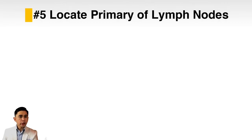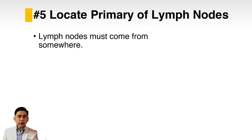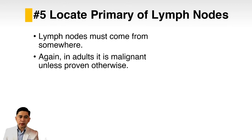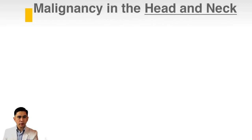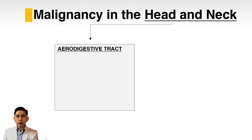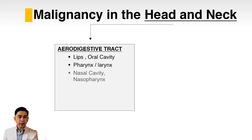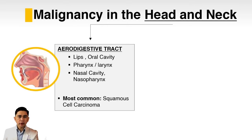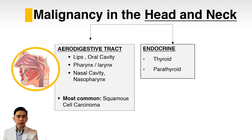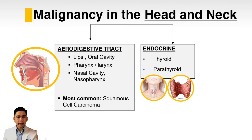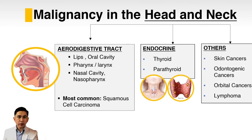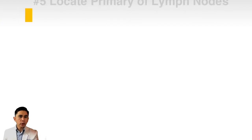Fifth, concerns about lymph nodes — you should try to locate the primary. Lymph nodes must have come from somewhere, and in adults it is malignant until proven otherwise. The types of malignancy found in the head and neck include: aerodigestive tract malignancies — lips, oral cavity, pharynx, larynx, nasal cavity, and nasopharynx, with squamous cell carcinoma being most common — as well as endocrine malignancies such as thyroid and parathyroid cancers, skin cancers of the face, odontogenic cancers of the maxilla and mandible, orbital cancers, and lymphoma.